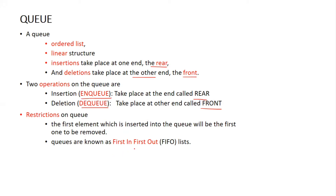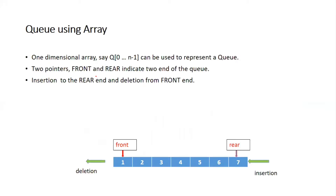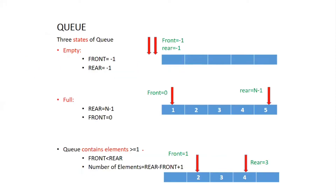Queues are also known as first-in-first-out lists. The representation of queues can be done using an array or a linked list. Two pointers will be there: front and rear. Front indicates where the deletion operation will be performed, and rear indicates where insertion takes place. For example, with seven elements, index one indicates the front portion and index seven is the rear.